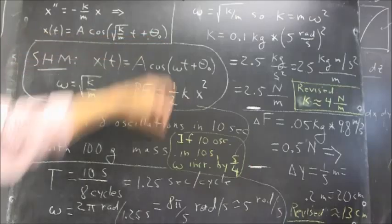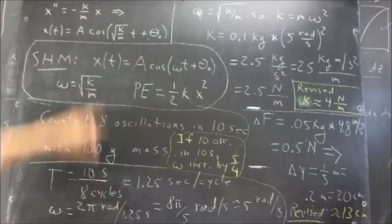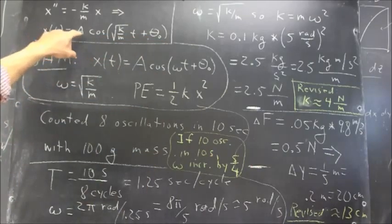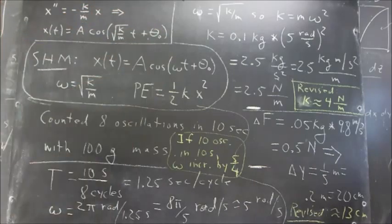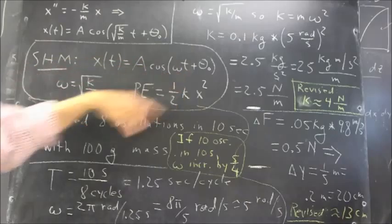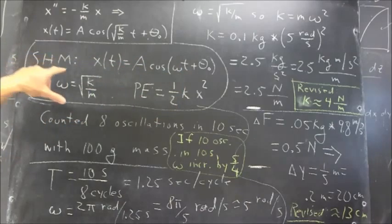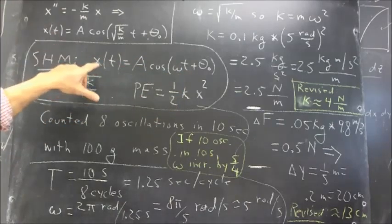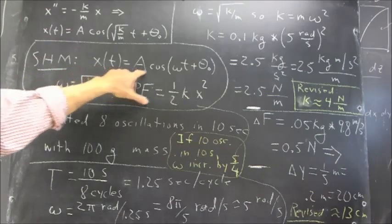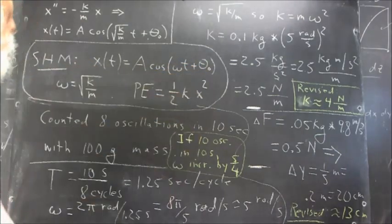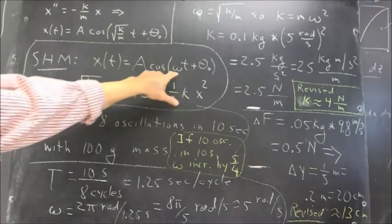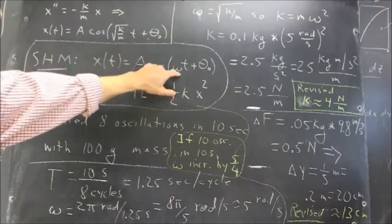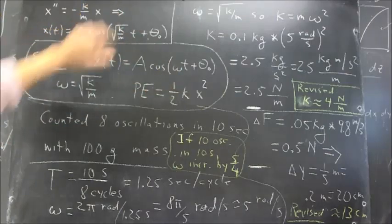Now the solution to that, as we've discussed at some length, can be written as X of T equals A cosine square root of K over M T plus theta naught. Simple harmonic motion in general can be modeled by a position function X of T equals A cosine omega T plus theta naught, with omega equal to square root of K over M.